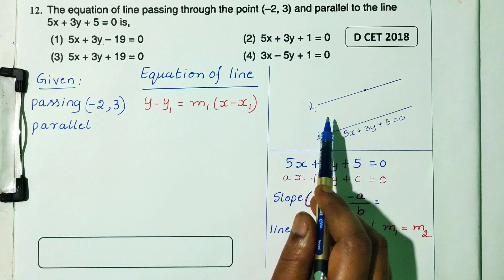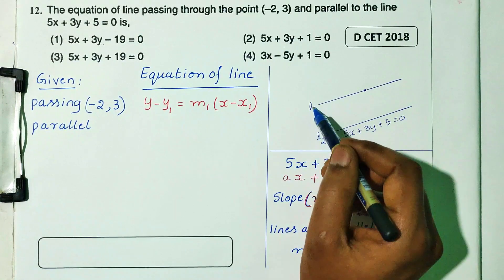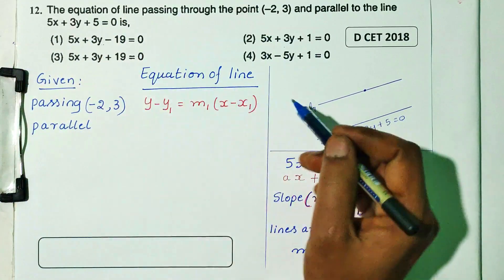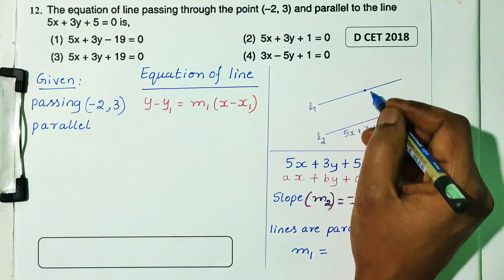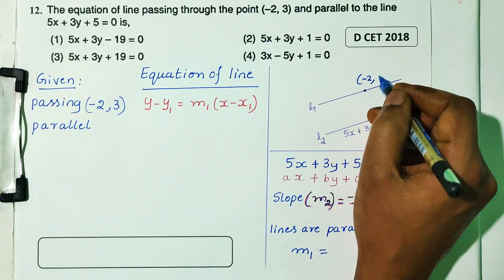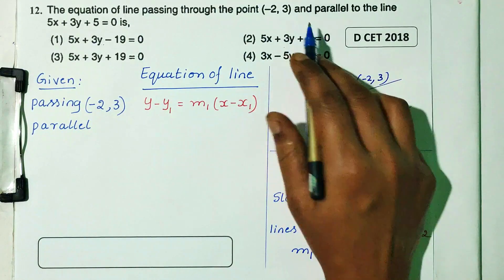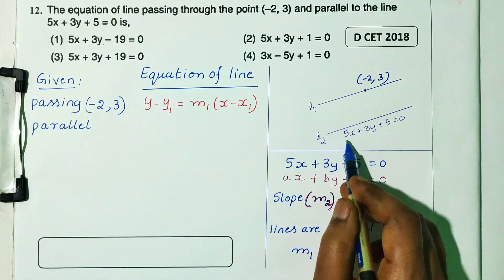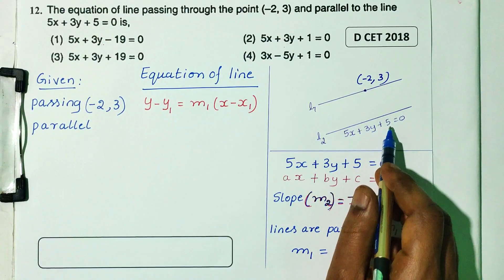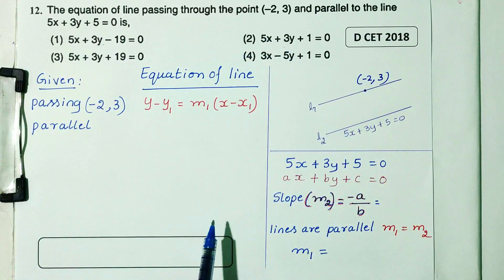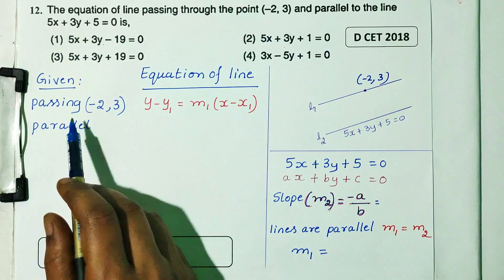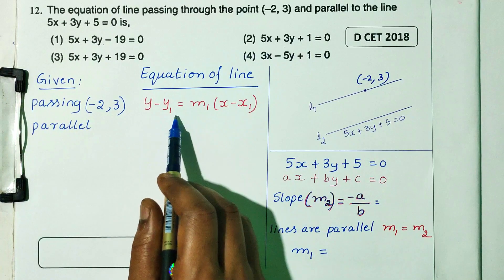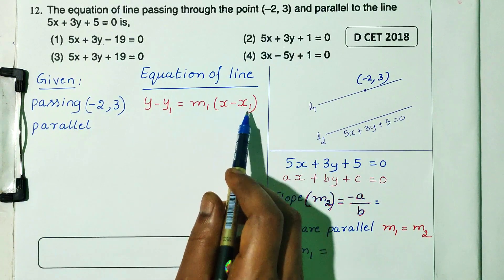When two lines are parallel, the first line is L1 and the second line is L2. The equation of line passing through point (-2, 3) is parallel to 5x plus 3y plus 5 equals 0. We use the formula y minus y1 equals m into x minus x1.